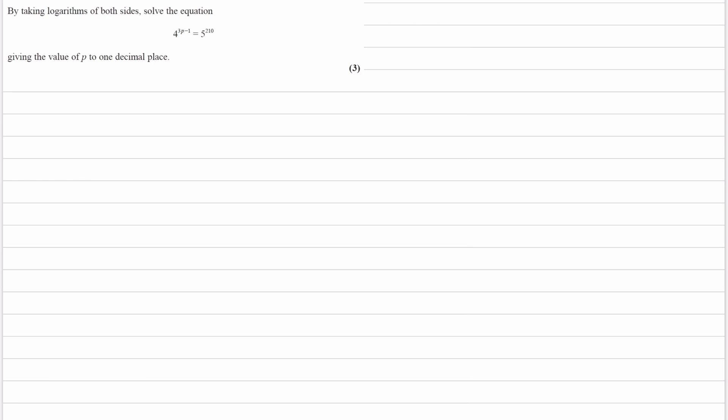So it says, by taking logarithms of both sides, solve the equation 4 to the power of 3p minus 1 is equal to 5 to the power of 2.10. And it wants us to give the value of p to one decimal place.